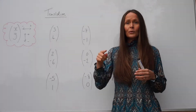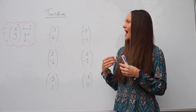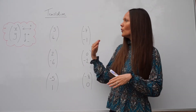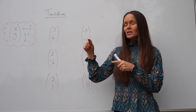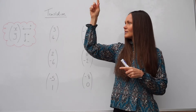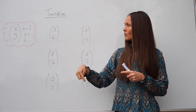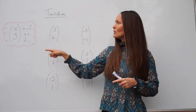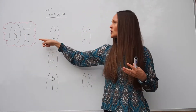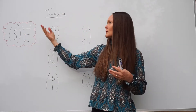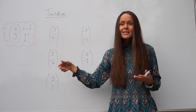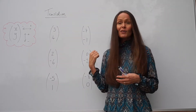The number underneath tells you whether to move the shape up or down. In the same way as the y-axis, a positive number means going upwards and a negative number means going downwards. So positive five would mean moving the shape five units up, and negative five would mean moving the shape five units down.